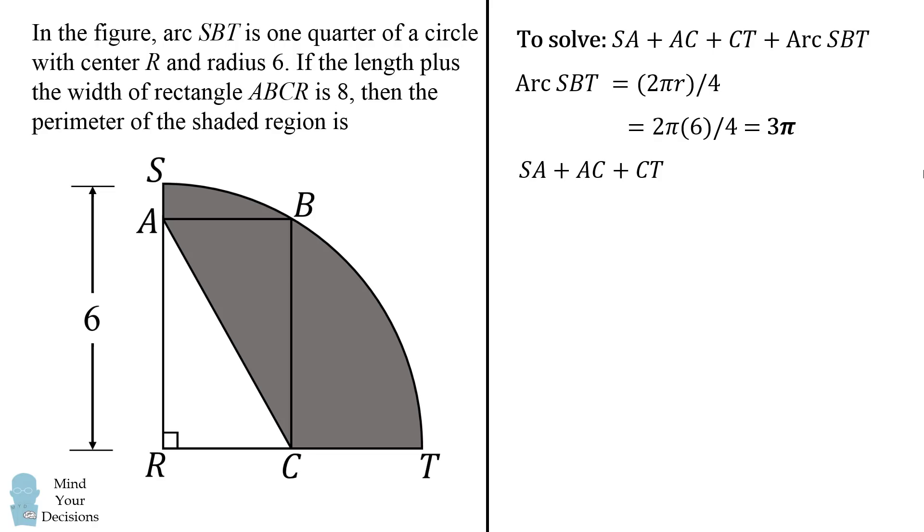The entire key is seeing that SA can be represented as the length of SR minus AR. Similarly, CT can be found as the length of RT minus RC. Now, why does that help us? Well, the reason is that we know all of these lengths.